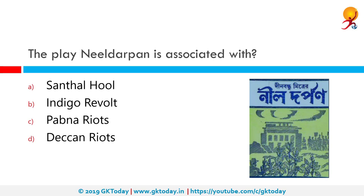The play Neel Darpan is associated with what? The correct answer is the Indigo Revolt. Neel Darpan is a Bengali play written by Dinabandhu Mitra in 1858-59. The play was essential to the Nil Bidroha or Indigo Revolt of February-March 1859 in Bengal, when farmers refused to sow indigo in their fields as a protest against exploitative farming under the British Raj.